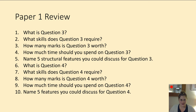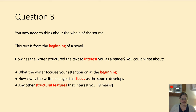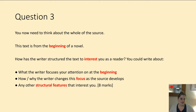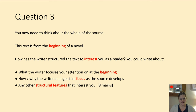So that was just a quick recap of paper one. Question three is this: it's from the beginning of a novel. 'How does the writer structure the text to interest you as a reader?' You can think about what your attention is focused on at the beginning, how and why the writer changes this focus, and any other structural features. What I'd like you to do is write down that question in the middle: 'How has the writer structured the text to interest you as a reader?' Pause it now, write it down and then come back.